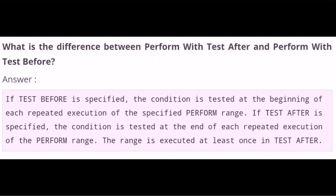What is the difference between PERFORM with TEST AFTER and PERFORM with TEST BEFORE? If TEST BEFORE is specified, the condition is tested at the beginning of each repeated execution of the specified perform range. If TEST AFTER is specified, the condition is tested at the end of each repeated execution of the perform range. The range is executed at least once in TEST AFTER.